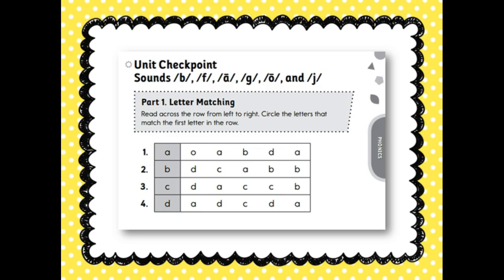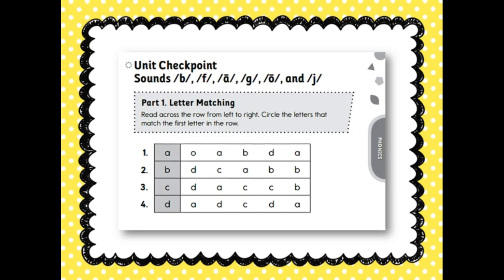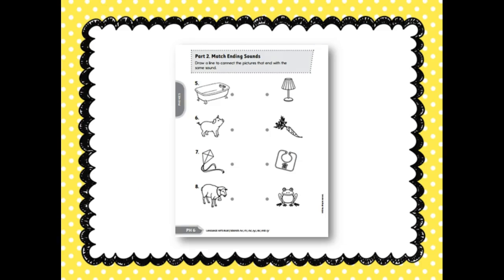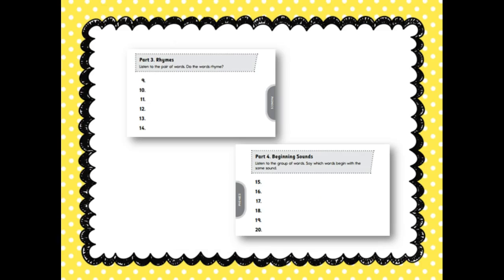Now that you've completed the online activities, it's time to complete your checkpoint. You will need the assessment book, pages 5 through 8, and you will also need the lesson guide, page 61, to complete these activities with your student. The first part is a letter matching activity. Part 2 will be matching ending sounds — be sure to tell your student the names of the pictures so they can match the ending sounds. Parts 3 and 4 are listening activities, so be sure to follow the instructions found on page 61 of the lesson guide so that your student can complete all four parts of the checkpoint.